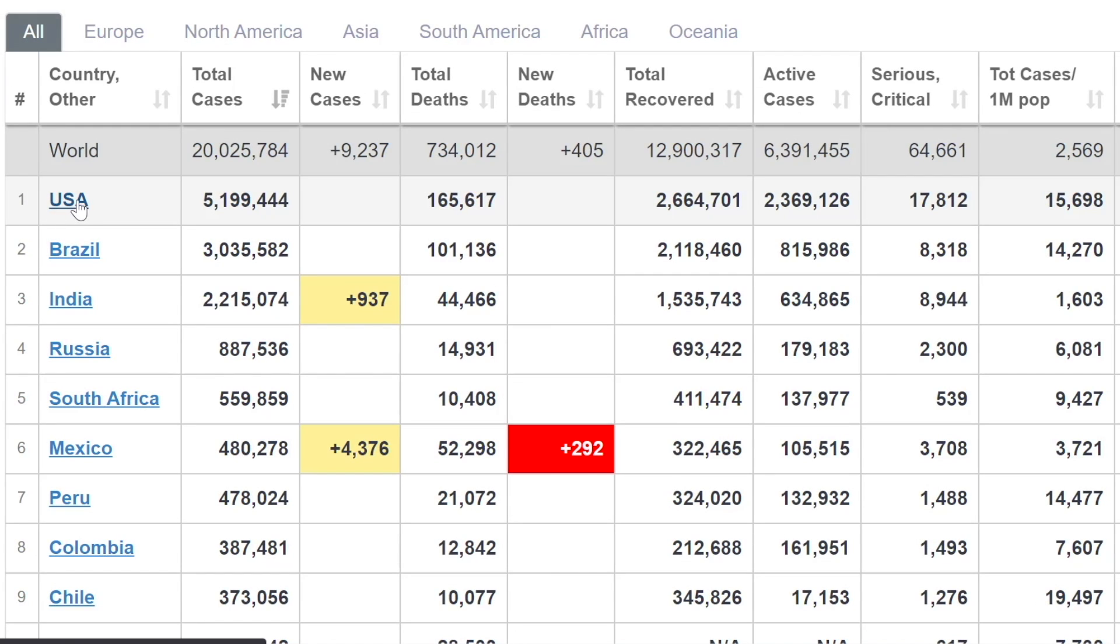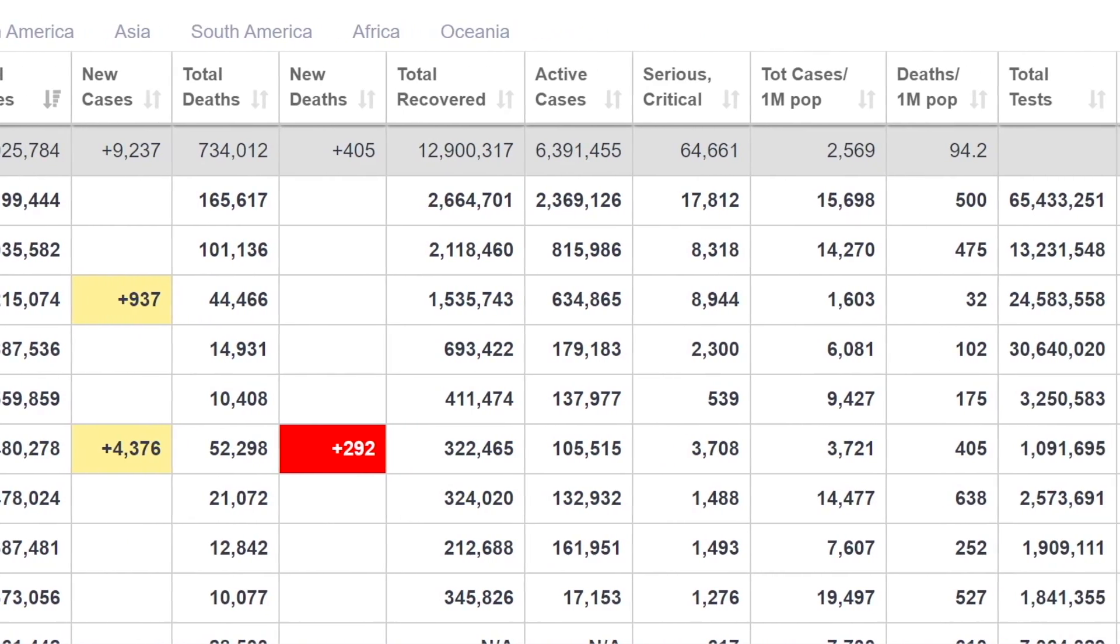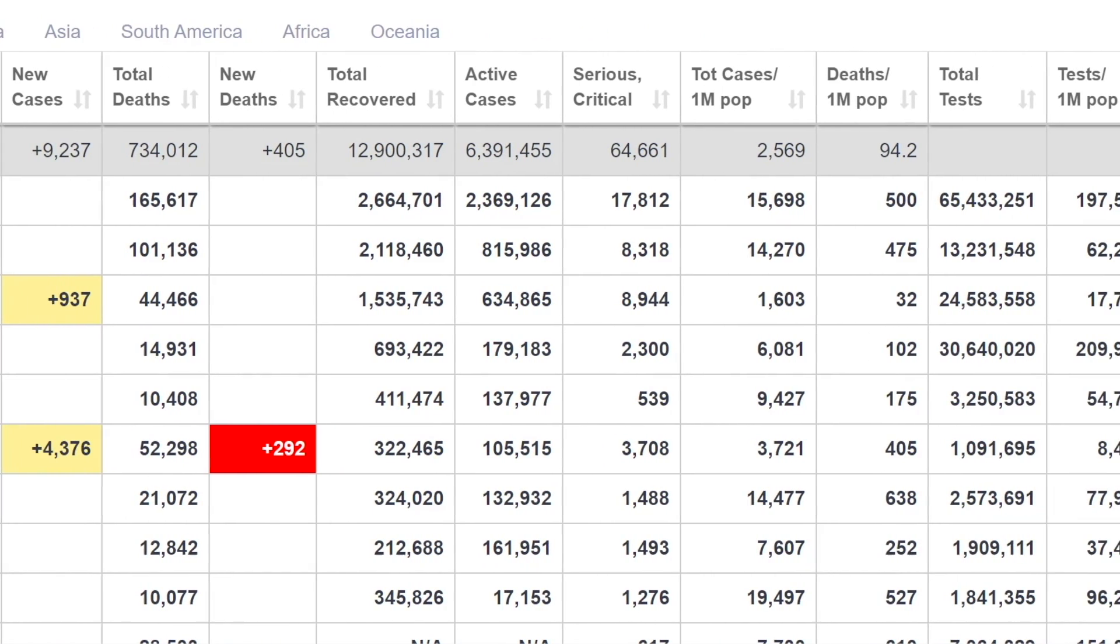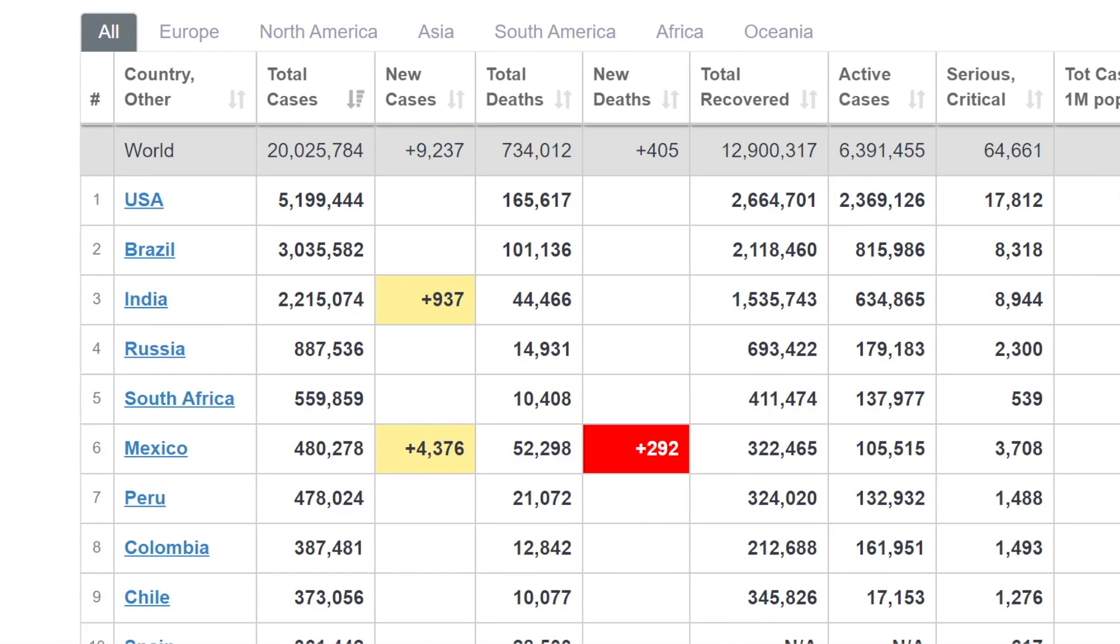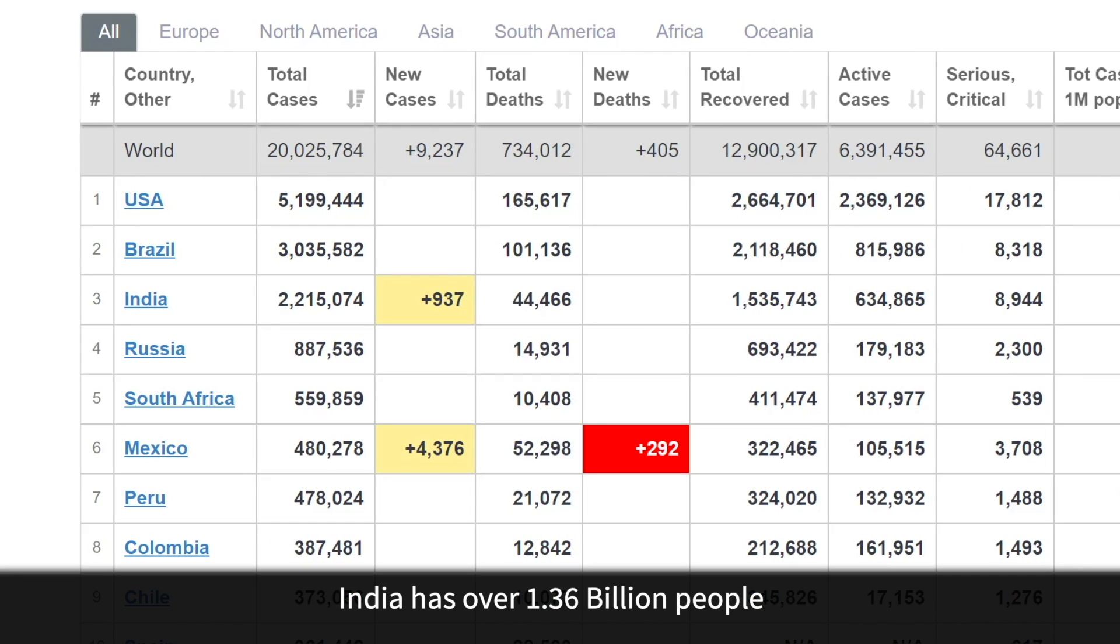However, what's interesting is if we look at the United States, Brazil, and India, and we look at the number of cases per million, you can see much higher in the United States and Brazil versus India. And also, the deaths per million are substantially lower. Maybe a number of reasons for that. One of which is with the tests per million being substantially lower in India as well. But it's hard to hide the deaths. And one has to remember that even though India is third on the list, it is one of the most populous countries in the world.